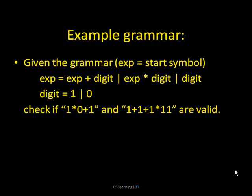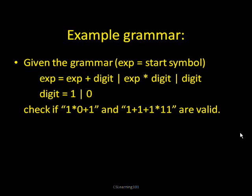Here's an example we can start with. I have a grammar with two rules. I have 'exp,' which stands for expression, and it could stand for one of three things: either exp plus digit, or exp times digit, or just digit. And digit can represent either one or zero. So you can see this should allow us to make simple mathematical formulas with addition or multiplication, using only the numbers one and zero.